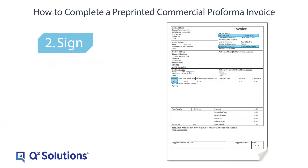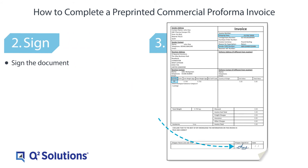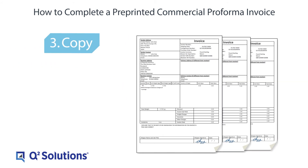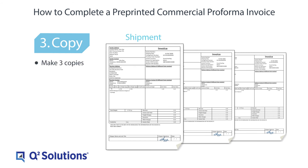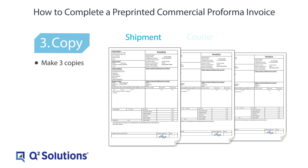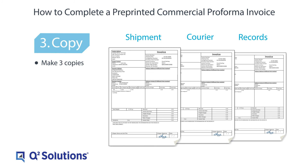Sign the document. Make three copies: one for the shipment, one for the courier driver, and one for your records.